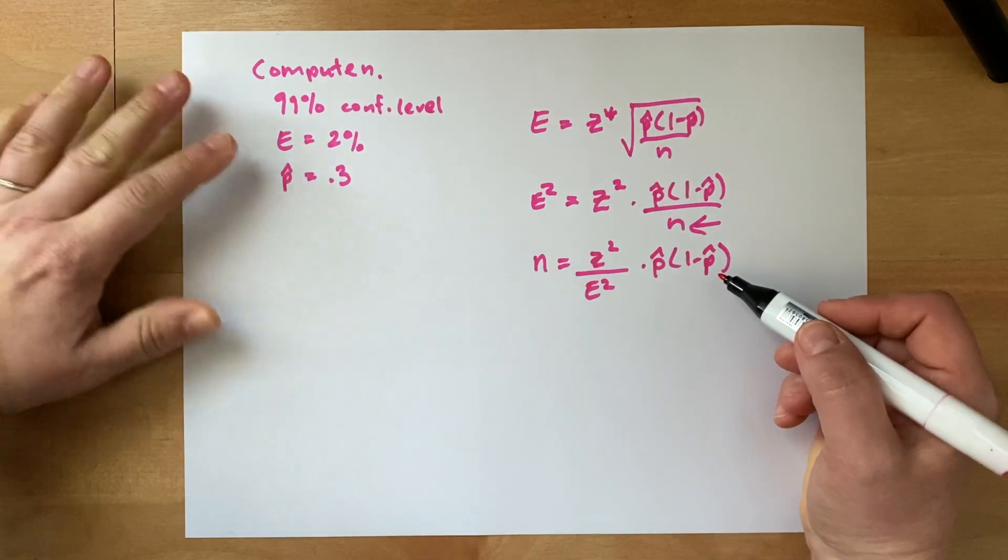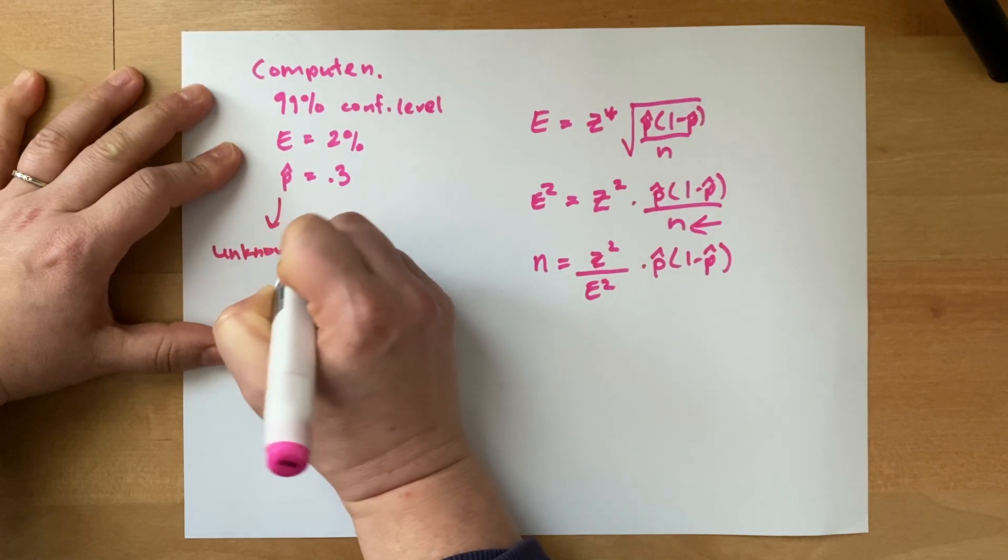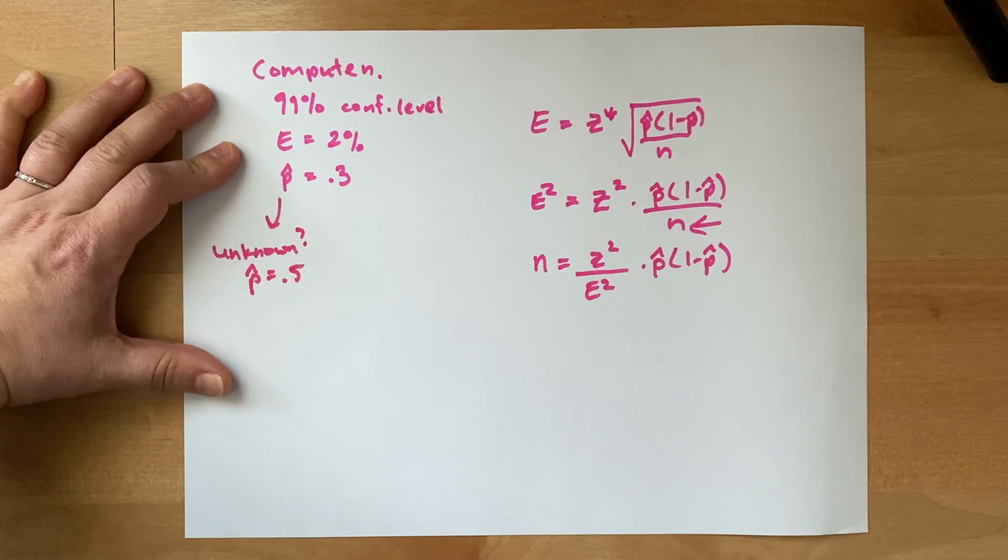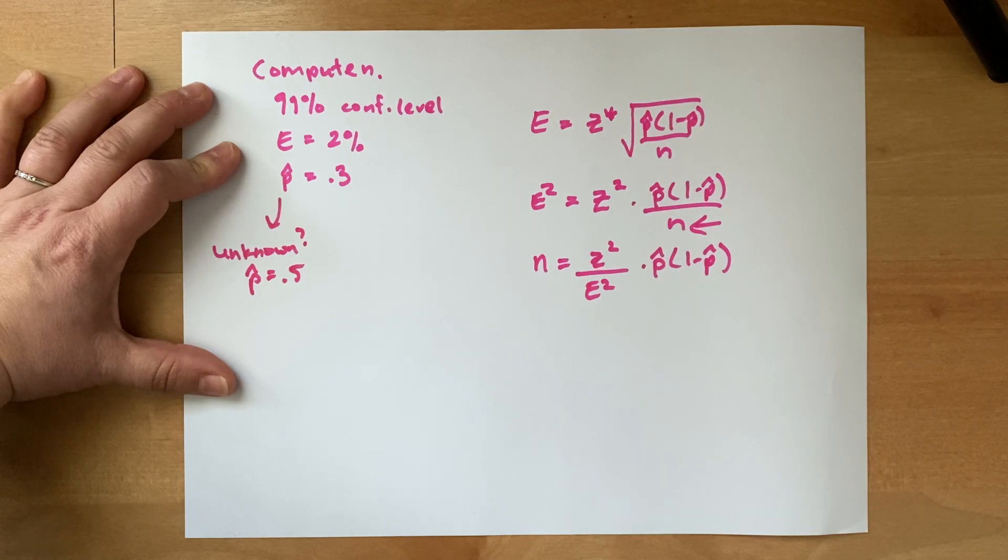So when p hat is unknown, you use p hat equals 0.5. That's because the worst case scenario is that your options for the probability of success are 50-50. So what ends up happening is you get the largest possible sample size.